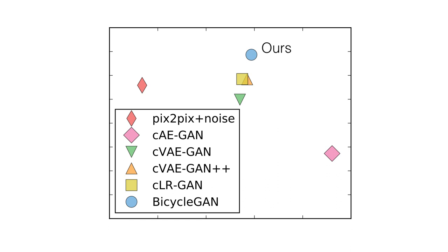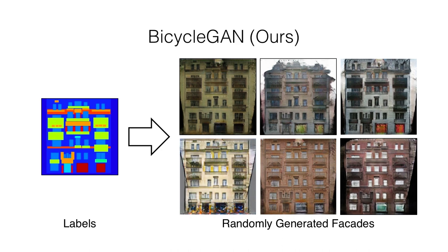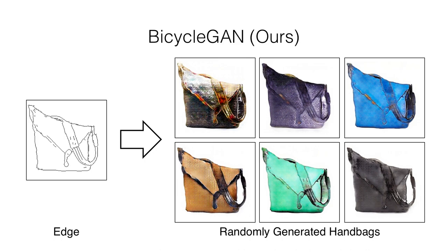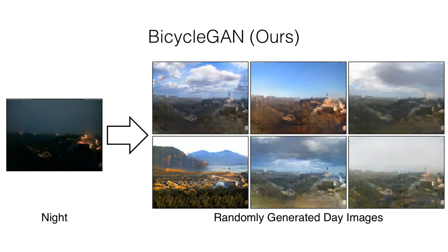Our method is able to achieve results which are both realistic and diverse. For example, on the problems of labels to facades, edges to shoes, edges to handbags, and night images to day images.